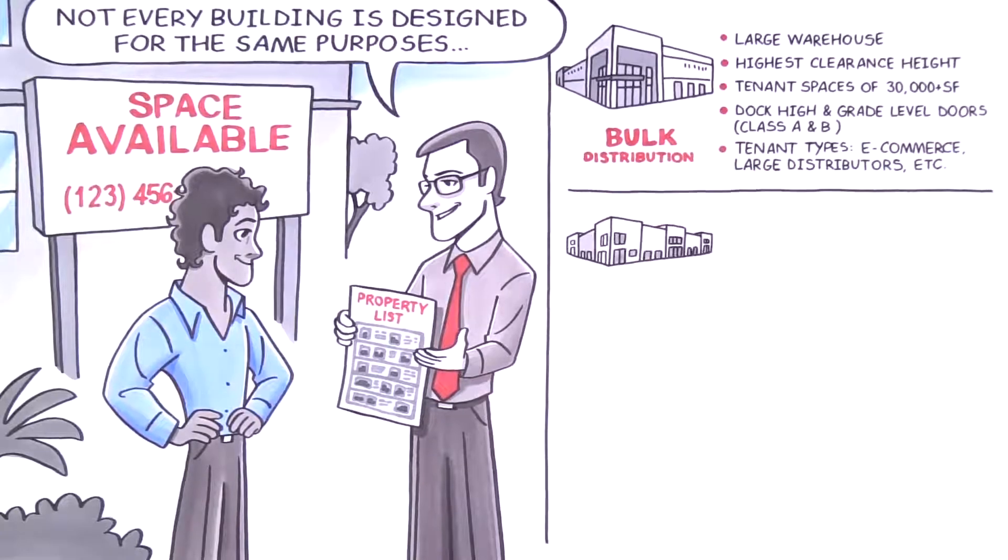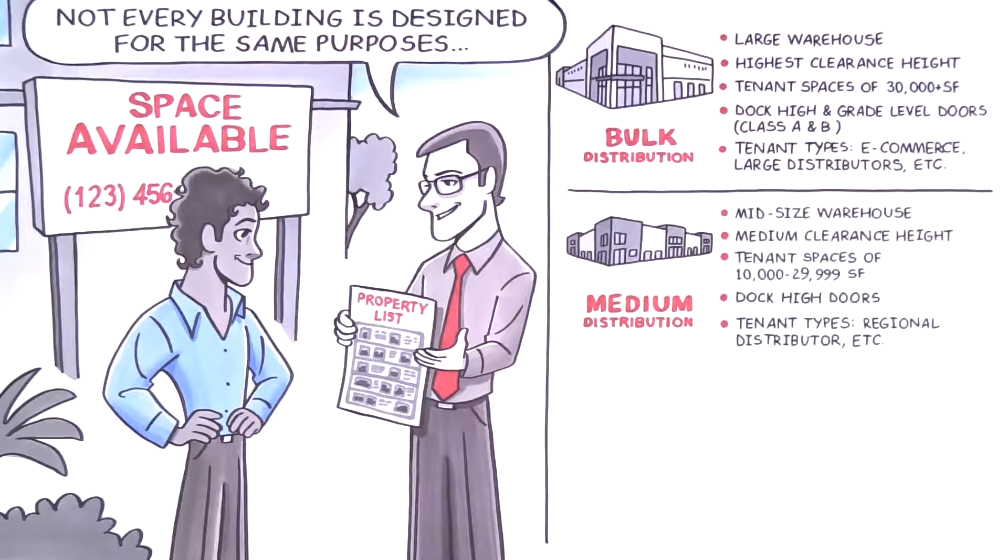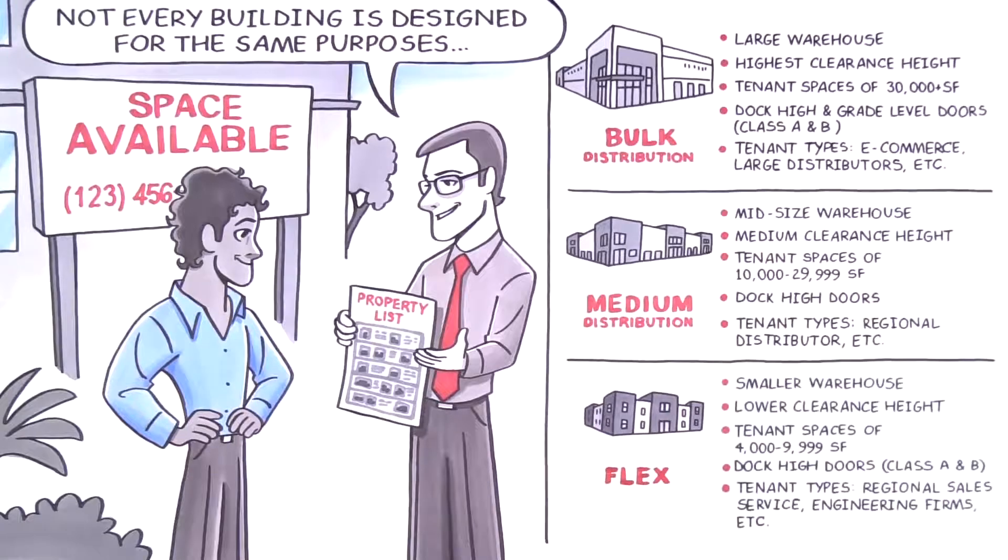Medium distribution buildings are mid-sized warehouses with tenant spaces of 10,000 square feet to just under 30,000. Flex buildings are smaller warehouses with tenant spaces of 4,000 square feet to just under 10,000 square feet.